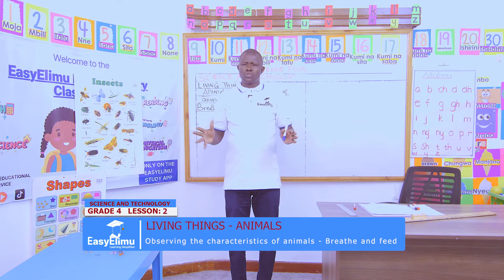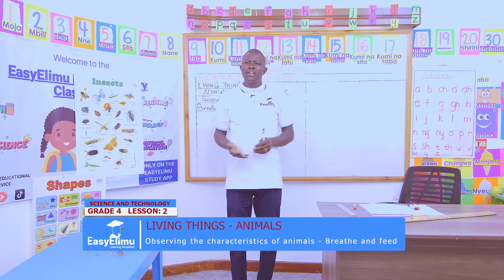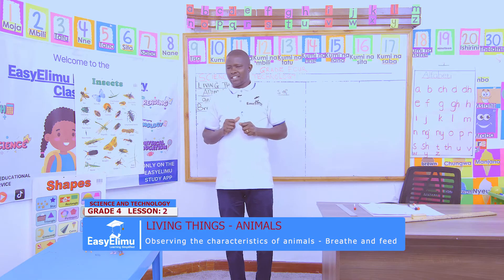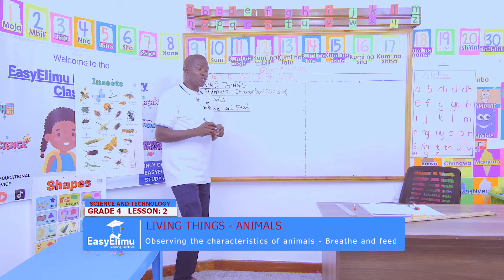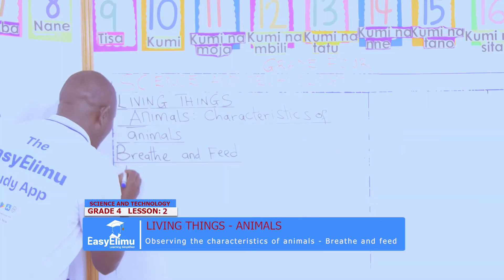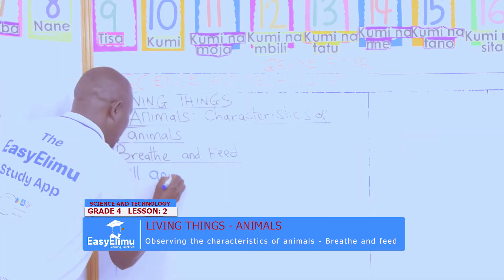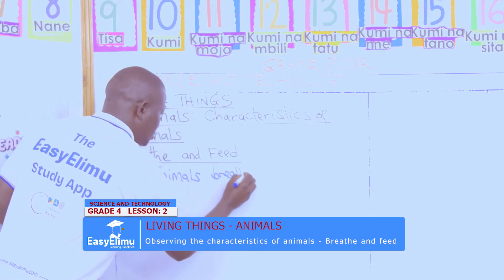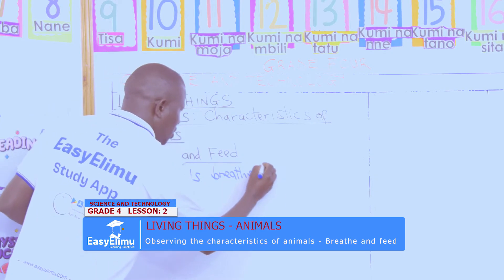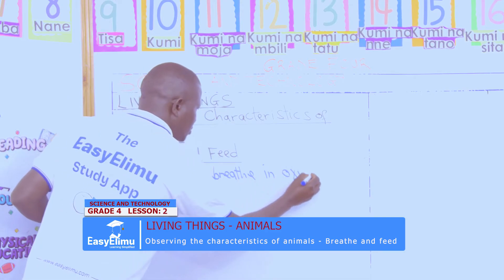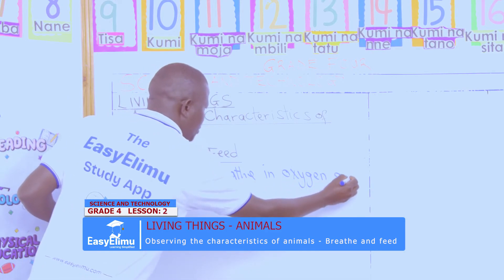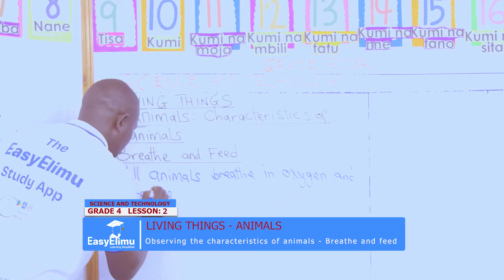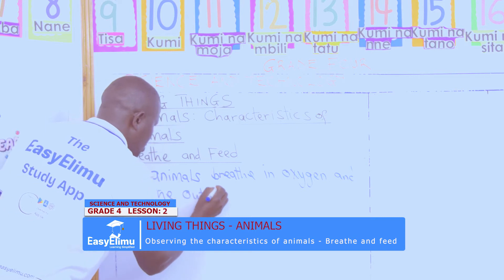All animals breathe in oxygen and breathe out carbon dioxide. So we say all animals breathe — they breathe in oxygen and breathe out carbon dioxide.